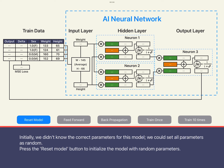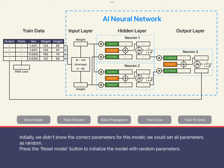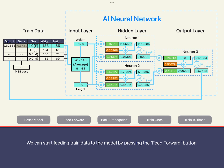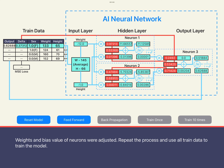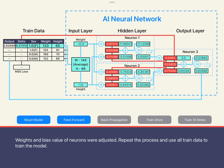First, we need to initialize the neural network. We initialize all weights and biases to random numbers. Then we start training and send the first piece of data to the neural network. We can see how data is computed in neurons and transmitted through the network, resulting in an output. A relatively large gap exists between the output and the expected result of 1.0. Based on this error, we decide how to reversely adjust each weight and bias value of each neuron, starting from the output layer to reduce this error.